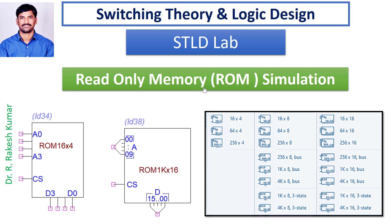If you look here, these are the typical ROMs available in DEID software. You can have 16x4, 64x4, and so on — up to 4096 words of 16-bit width like the 4090. You have a variety of read-only memories available in DEID software and we'll see how to simulate them.